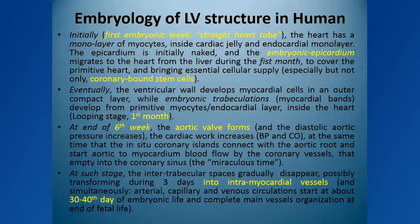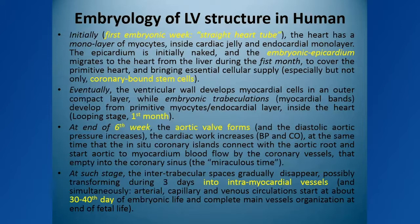These embryonic trabeculations are not functional structures. They can acquire energy and nutrients through direct transference of oxygen, glucose, and other blood components for their own nutrition. They maintain histologic viability, but functionally they have nothing to do in the early embryo. It is the compact muscle that starts beating. By the end of the first month, the heart is already beating.